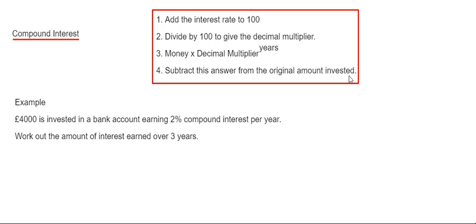Let's have a look at the example here. We've got £4000 is invested in a bank account earning 2% compound interest per year. Work out the amount of interest earned over three years.